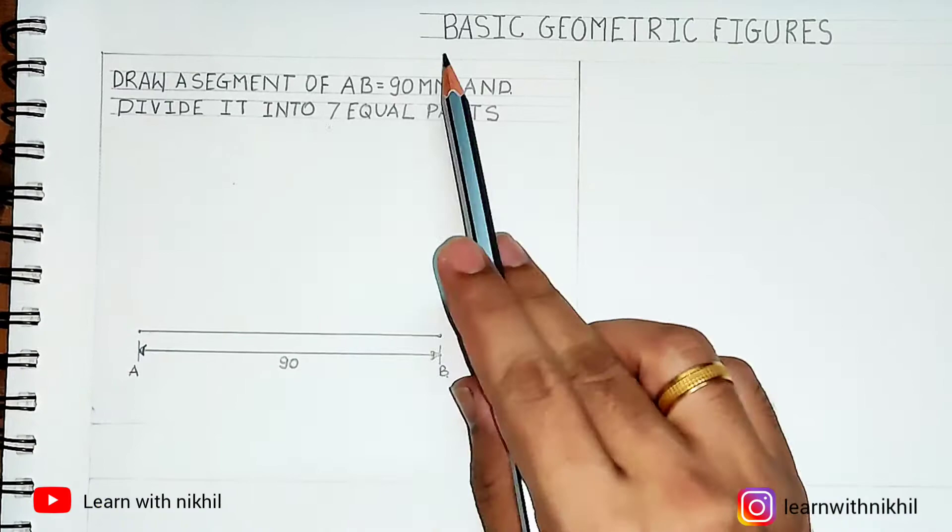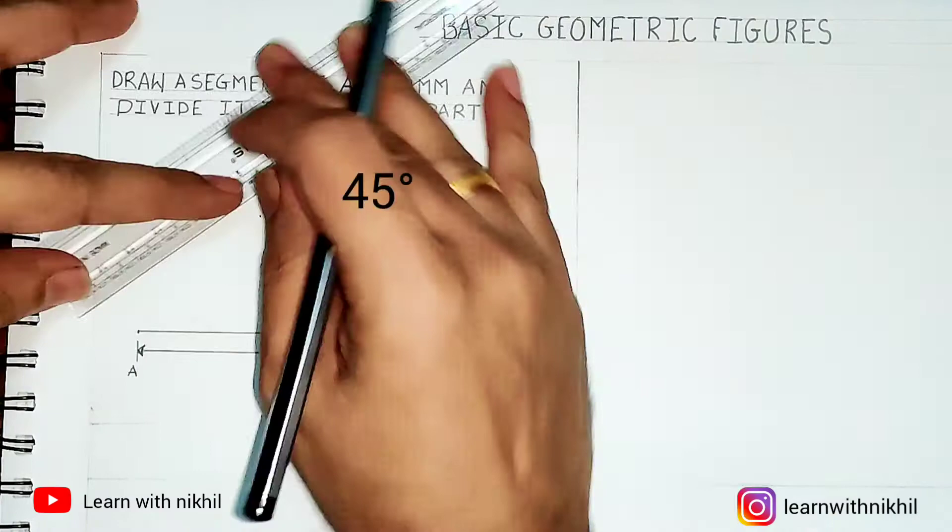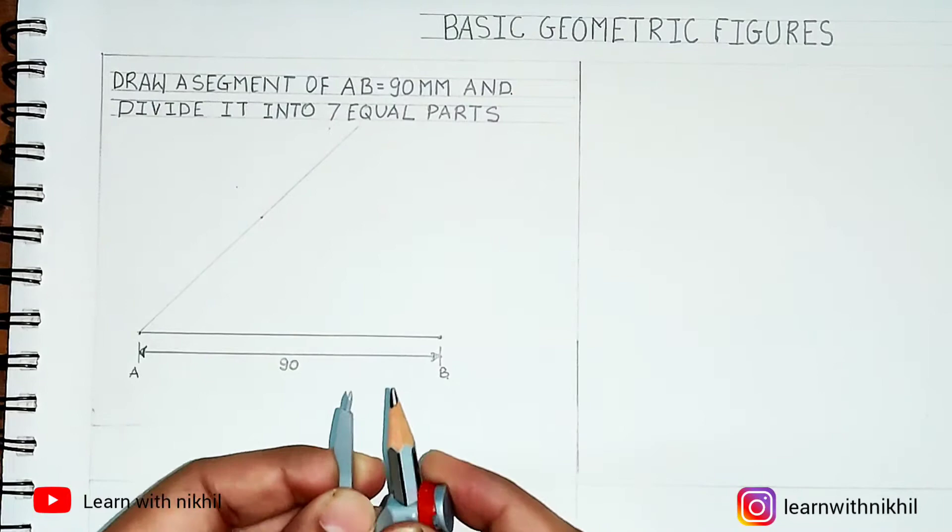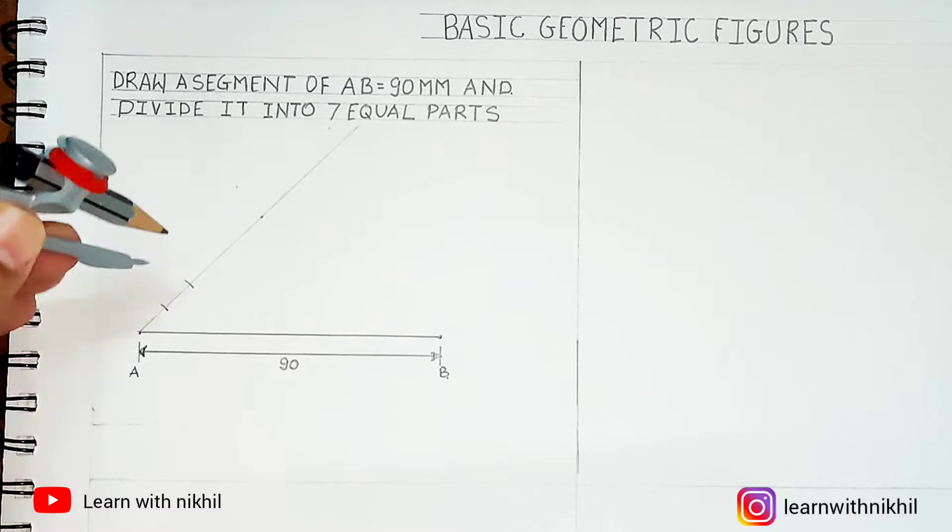Now for dividing the line into seven equal parts, step one is that we will draw an angle of 45 degrees. Keep in mind, we have to draw an angle of 45 degrees. Now you have been asked to divide the line into seven equal parts.